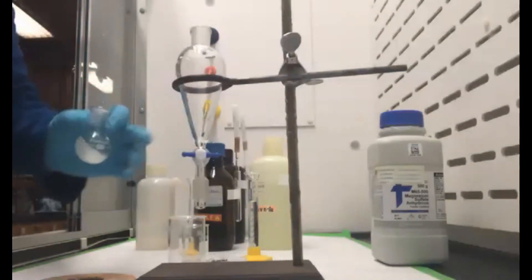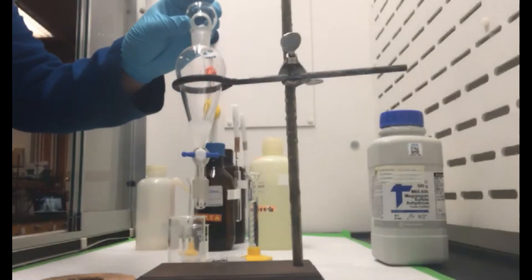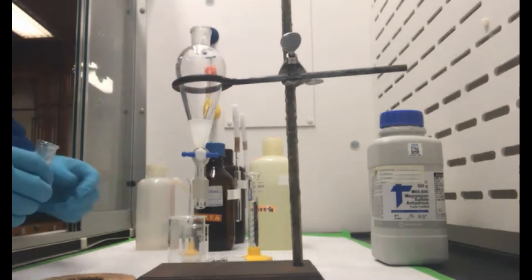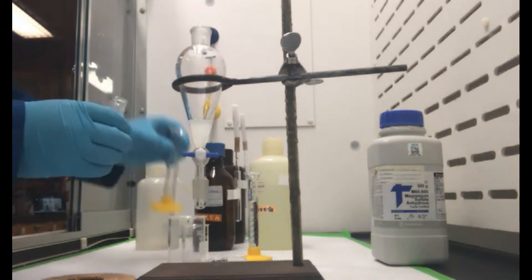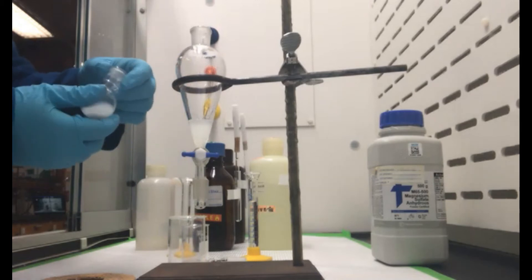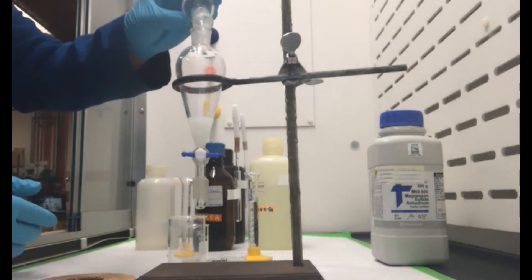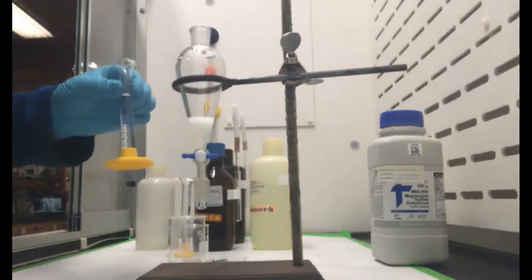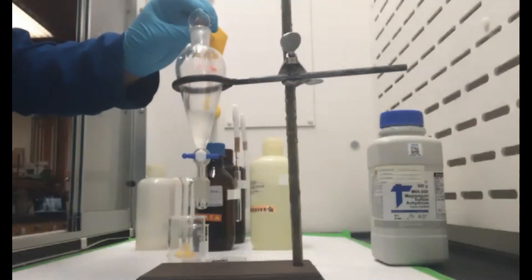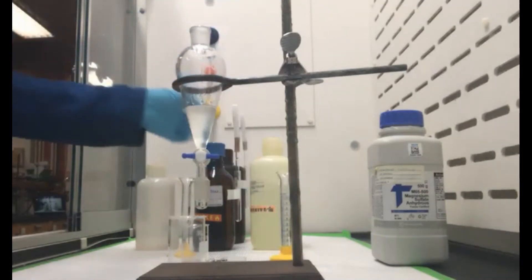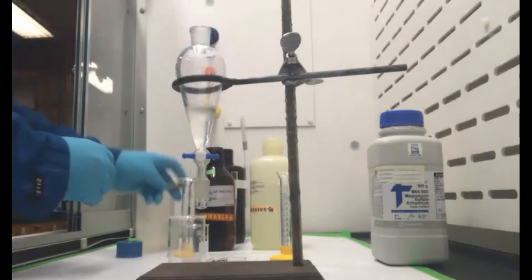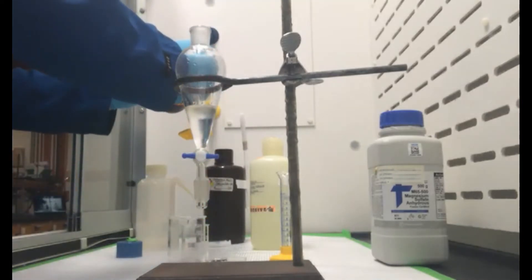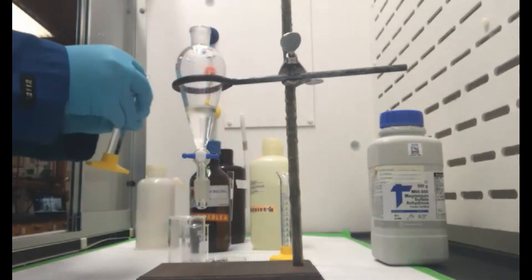So I have the product. I'm going to add that to the sep funnel. I'm going to add our crude mixture here. I'm also going to take that round bottom and just wash with a couple more mils. Wash with a couple mils of MTBE and we're going to add that. We can set that aside. And now to this, I am going to add some water. And then we're going to add just a little bit more MTBE for the extraction. Five mils of MTBE.